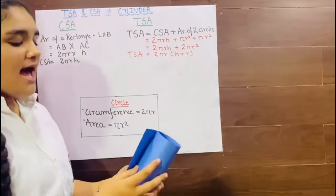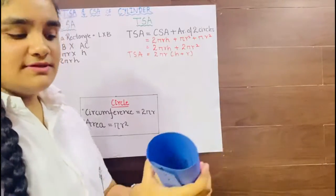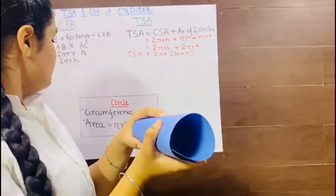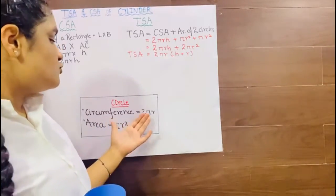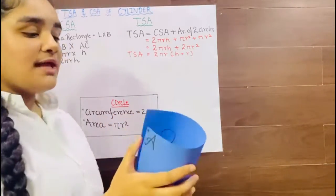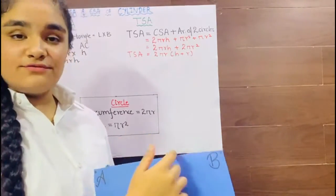Now I will fold it and I will see that this is making a boundary of a circle. A boundary of a circle is called circumference and the formula of circumference is 2πr. When I open it I will see that this was the boundary of the circle. This was the circumference.